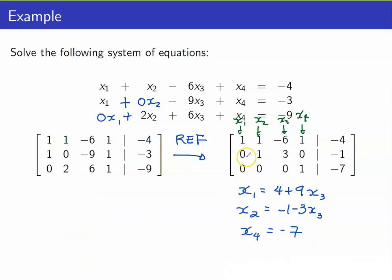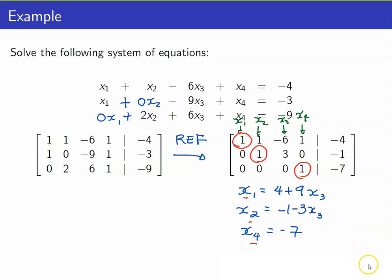Let us go back to our row echelon form. If we look at our leading entries, our leading entries are 1, 1, and 1. Notice that the first, second, and fourth columns are what we call pivot columns because they contain our pivots or leading entries. You have x1, x2, and x4 — they correspond to our pivot columns, and we were able to solve for x1, x2, and x4. If we look at our third column, this is a non-pivot column. The non-pivot columns would represent free variables.